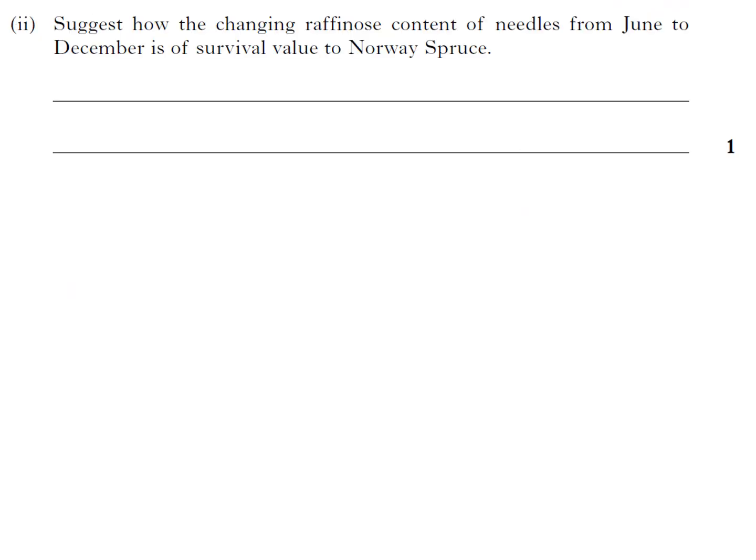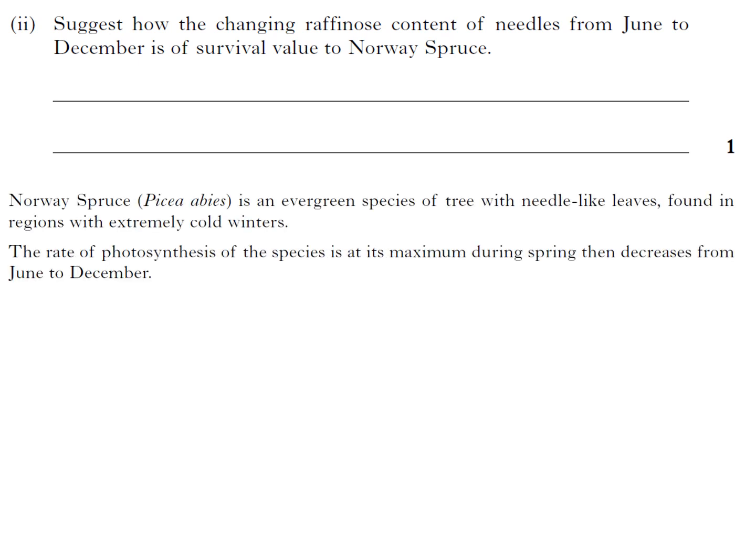Suggest how the changing raffinose content of needles from June to December is of survival value to the Norway Spruce. Again, you have to just kind of bring stuff together here. So remember this from the start: evergreen species found in regions with extremely cold winters. The rate of photosynthesis of the species is at its maximum during spring, then decreases from June to December.